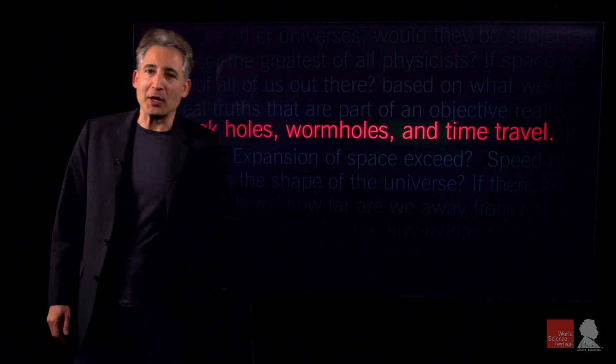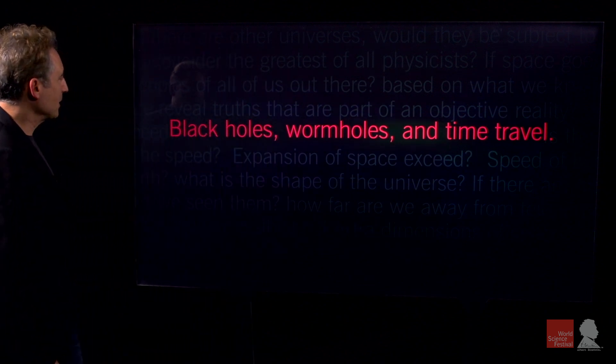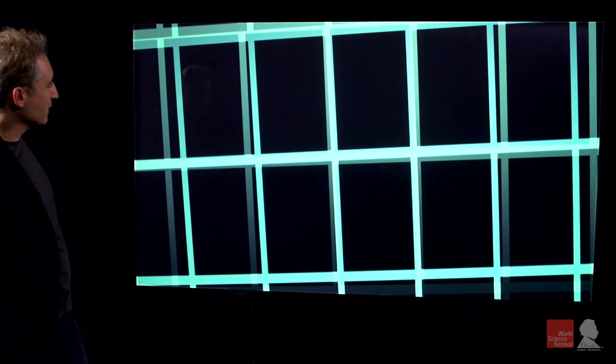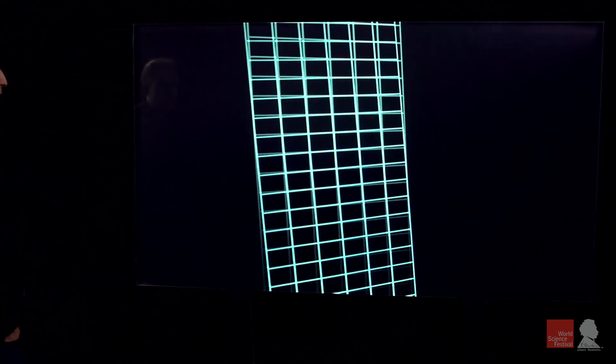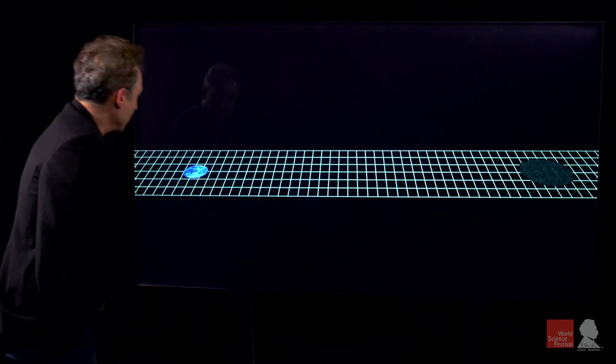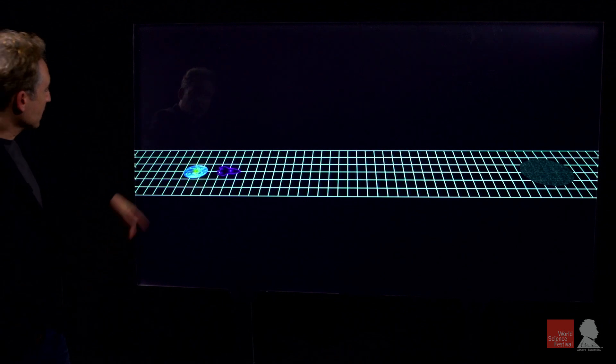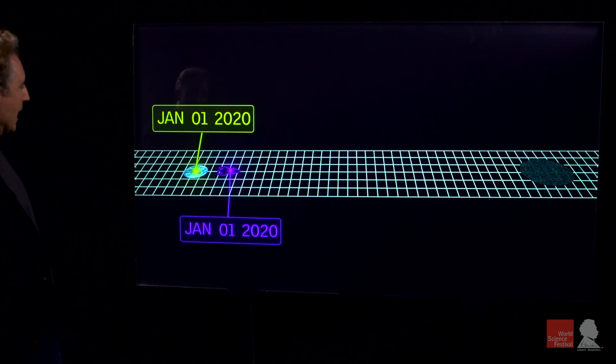Let me describe how that goes. Imagine that we have a region of space, and we've got a spaceship. To keep track of time, we're going to put a clock on the ship and a corresponding one back on Earth. Now we're going to go on a journey.